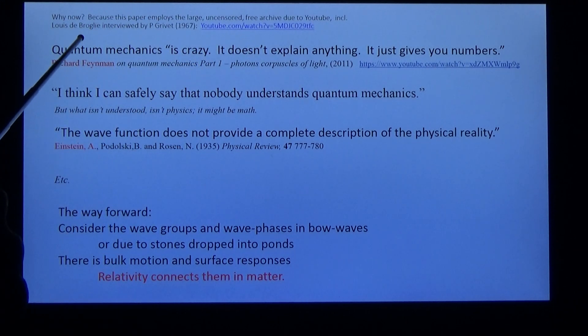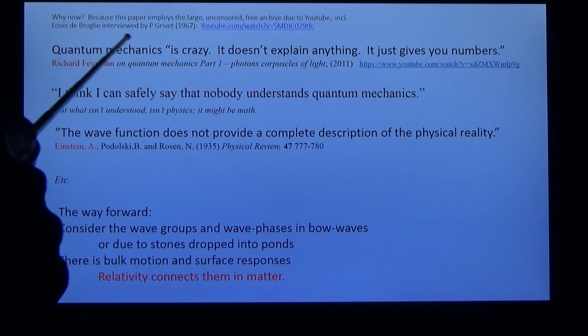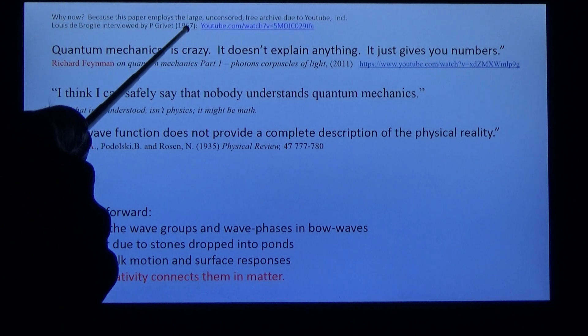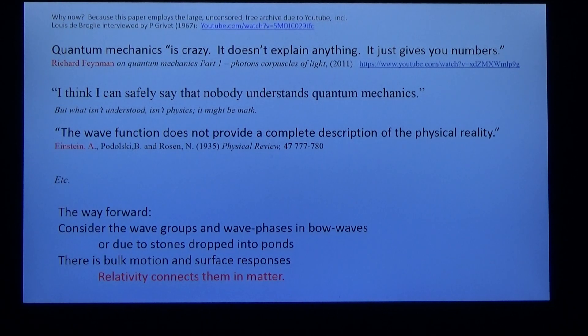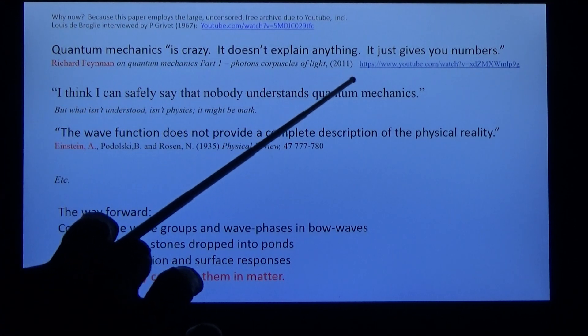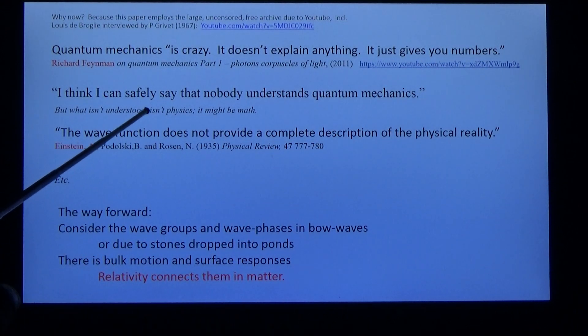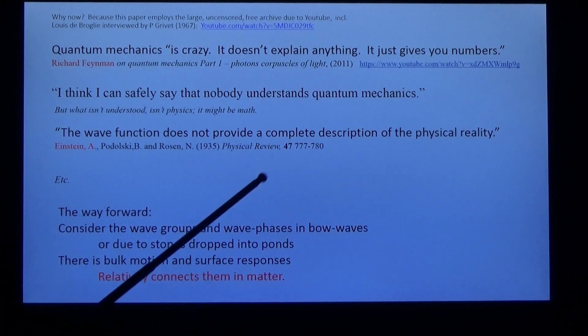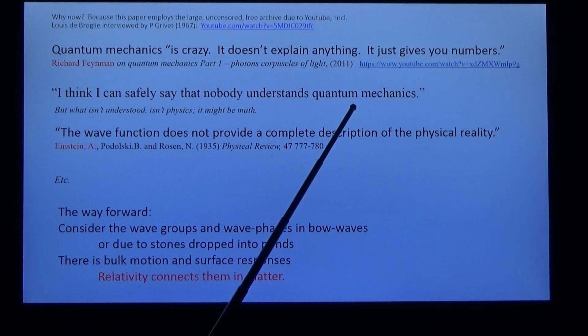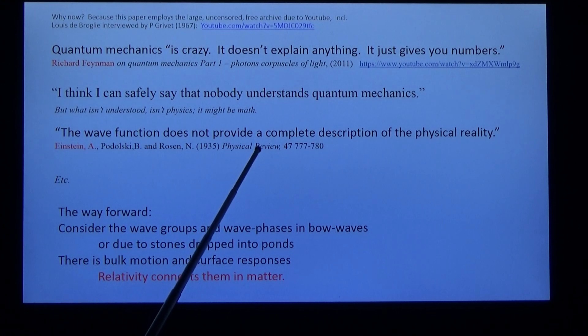Now, because YouTube has recently published an interview with Louis de Broglie by Grieve, there are also other interviews which bear on this matter. Richard Feynman said of quantum mechanics: it's crazy, it doesn't explain anything, it just gives you numbers. He also said, I think I can safely say that nobody understands quantum mechanics. Einstein was more critical: the wave function does not provide a complete description of the physical reality.